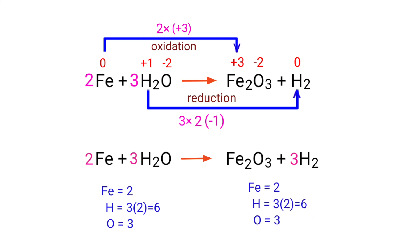The equation is now balanced. There are 2 iron atoms, 6 hydrogen atoms, and 3 oxygen atoms on both sides.